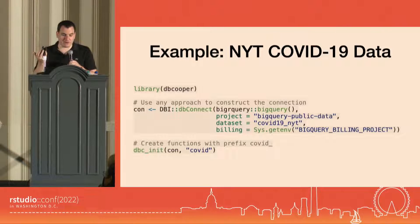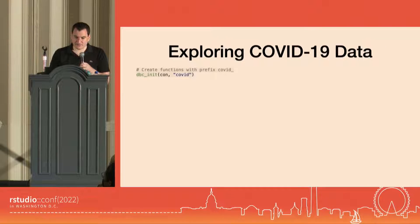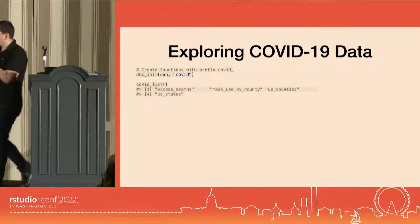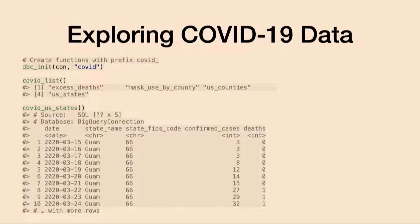Then all we have to do with DB Cooper is dbcinit, and we'll say we'll use the prefix COVID. So all of our functions to access the data are going to start with the word COVID. Now that I've done dbcinit, I could use covid_list to see that there are four tables in this database. And if I want to access one of them, I could say covid_us_states — an autocomplete-friendly way to access one of the tables. We see data that looks like a time series, separate across each of the US states, with columns for confirmed cases and deaths. It gets updated daily, so we could build something on top of this that, unlike a static dataset, is going to stay up to date.